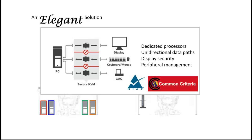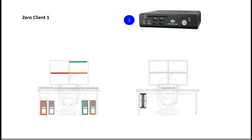Let's talk about what makes the secure KVM special and accepted by the information assurance community. The KVM itself is secure — it's not the typical commercially available KVM; it has been specially modified. It has isolated port paths for video, audio, peripherals, and smart card readers that prevent data crosstalk. It's got unidirectional data paths, display security with a protected display interface that prevents data leakage from monitor to monitor, and end-to-end tamper protection design.